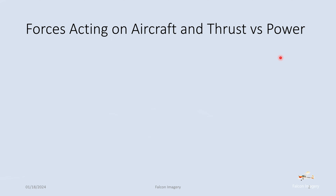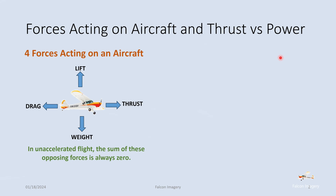We first want to talk about the forces acting on an aircraft and the thrust versus power relationship. The aircraft has four forces working on it: two forces opposing each other in the vertical direction and two forces opposing each other in the horizontal direction. We have lift that wants to pull the plane up and weight — the gravitational force of the earth — pulling the plane down. In the horizontal plane, we have thrust trying to pull the aircraft forward and drag trying to pull it backwards. In unaccelerated flight, the sum of these opposing forces is always zero.